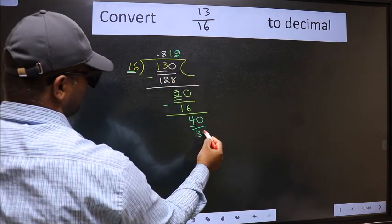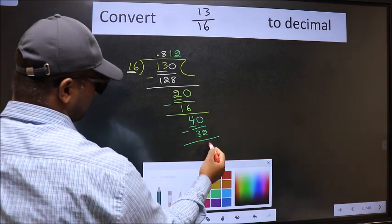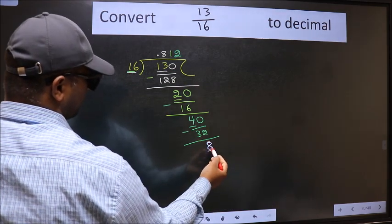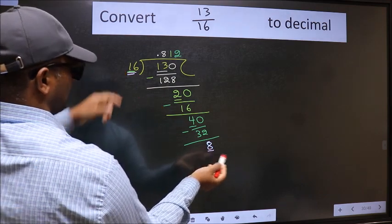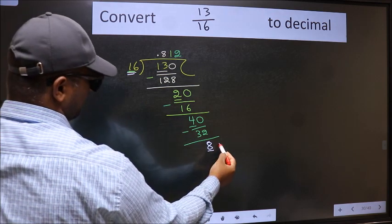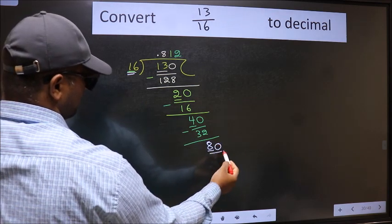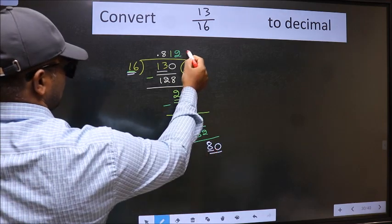Now 8 and here 16. 8 is smaller than 16 and we already have the decimal, so directly take 0, so 80. When do we get 80 in 16 table? 16 times 5 is 80.